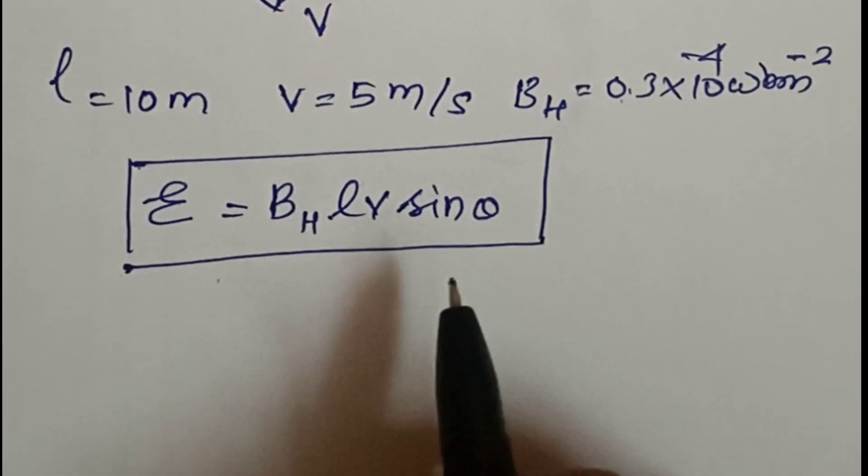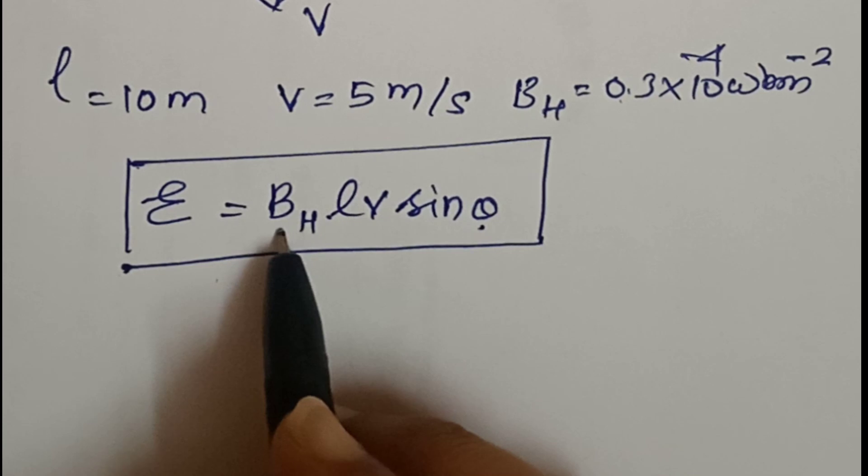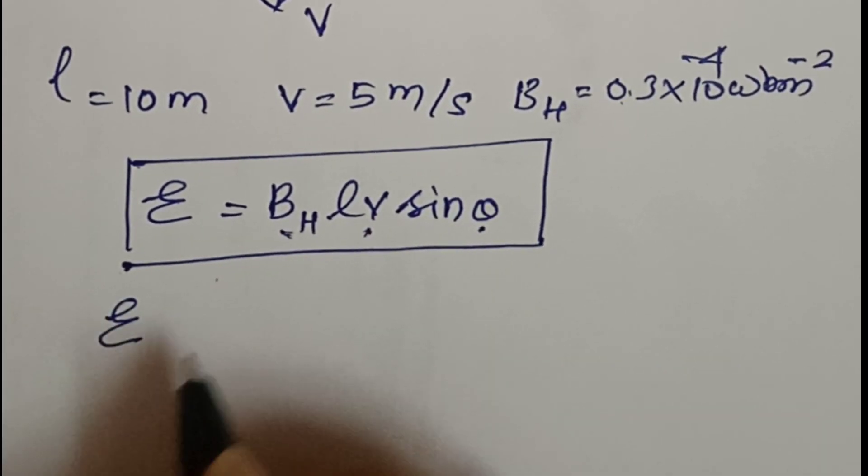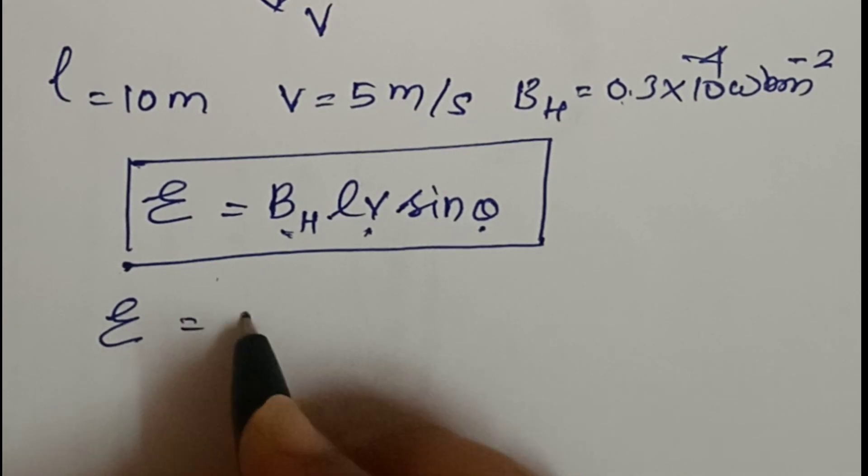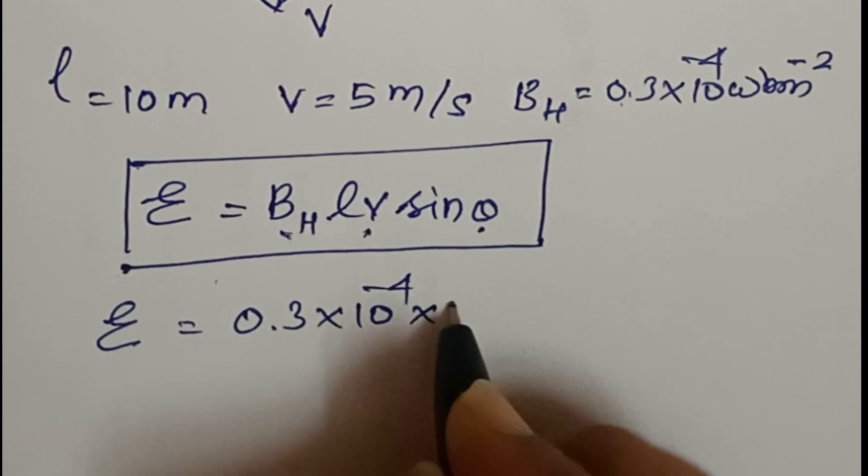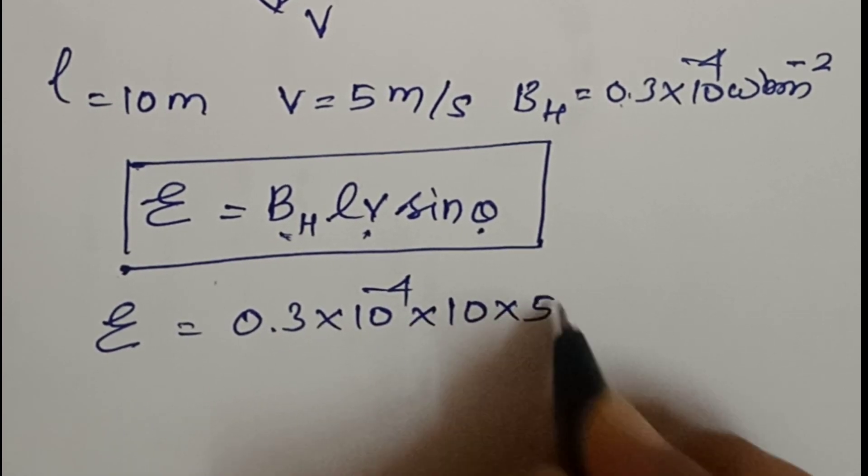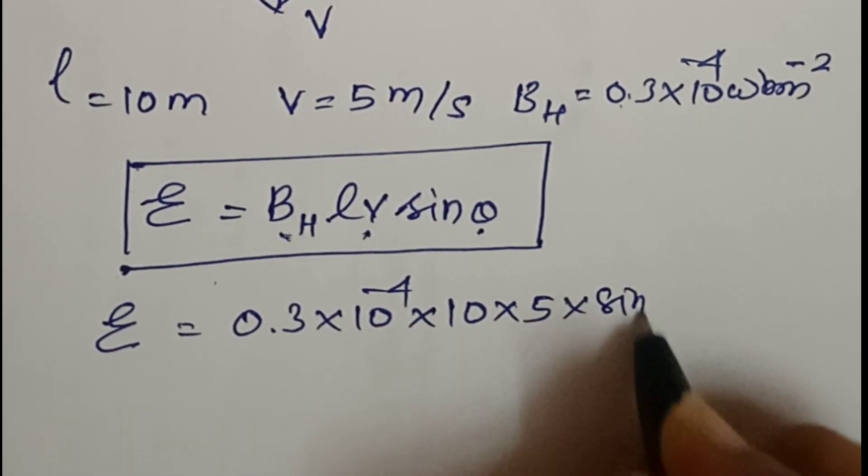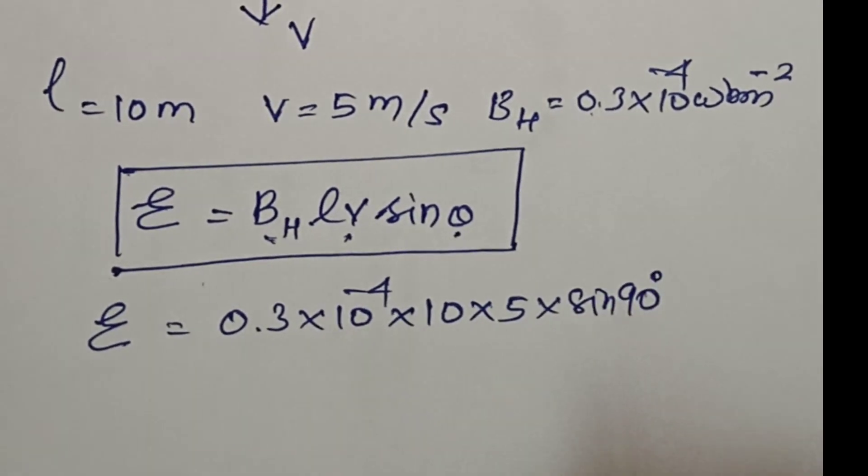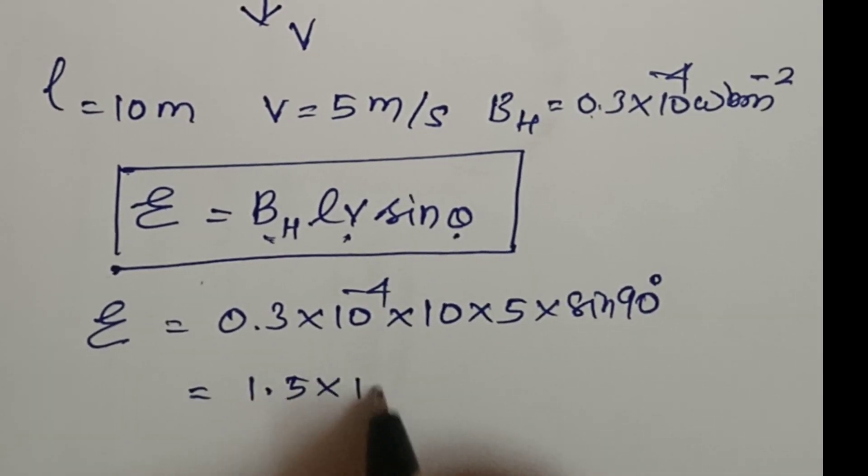Theta is B and V is equal to 90 degree. Therefore, we will substitute. BH value is equal to 0.3 into 10 power minus 4. L is equal to 10 into V is equal to 5 into sin 90. So if you multiply the answer is equal to 1.5 into 10 power minus 3 V. This is first.